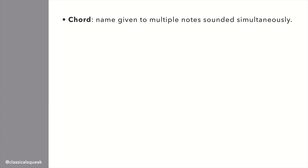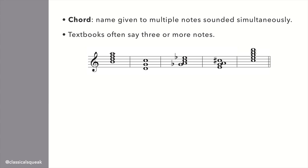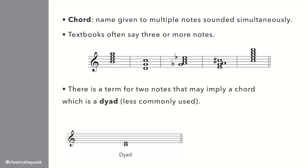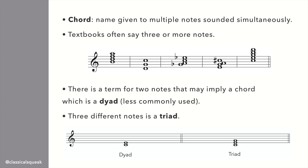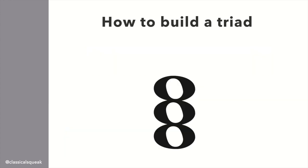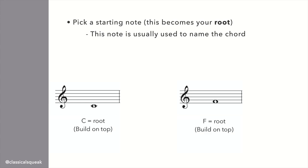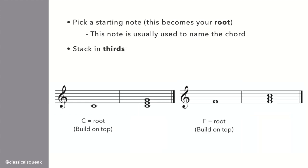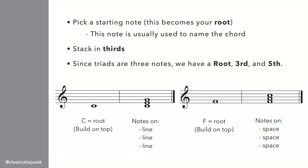First, a little review. What are chords? A chord is the name given to multiple notes sounded simultaneously. A lot of textbooks say three or more notes, but there is a term for two notes, which is a dyad, it's just less commonly used. Three notes is a triad. Building a triad is pretty simple. We start with a snowman. Pick a starting note, which becomes your root, and build up in thirds, which gives you notes on a line, line, line, or space, space, space.